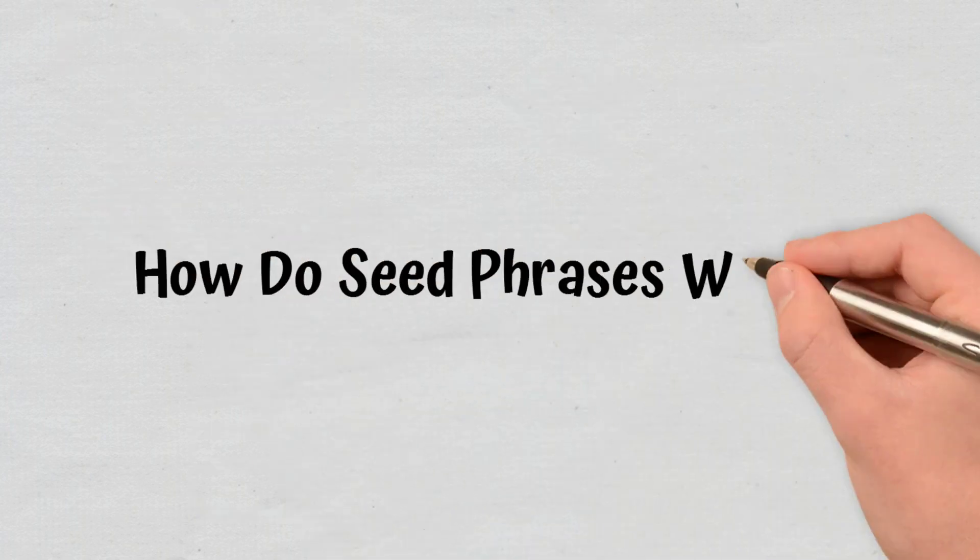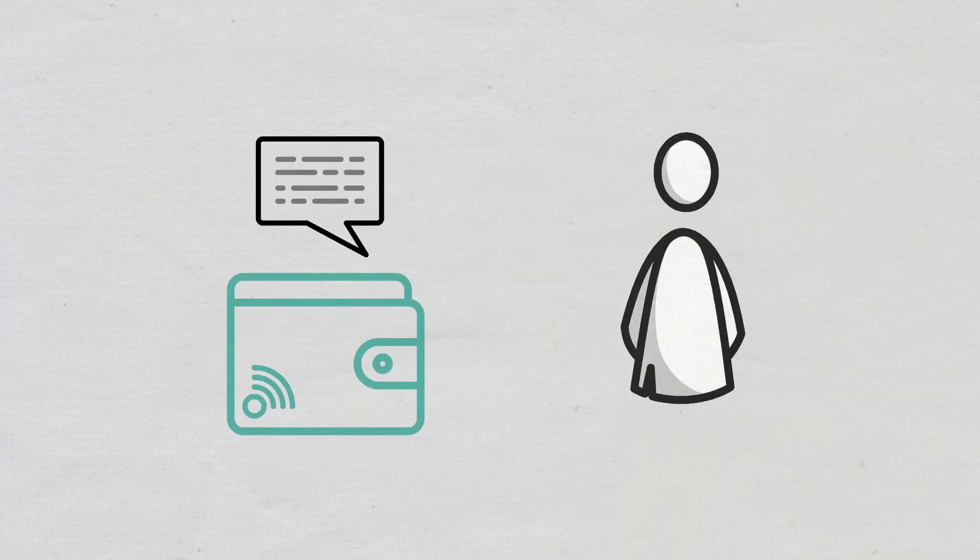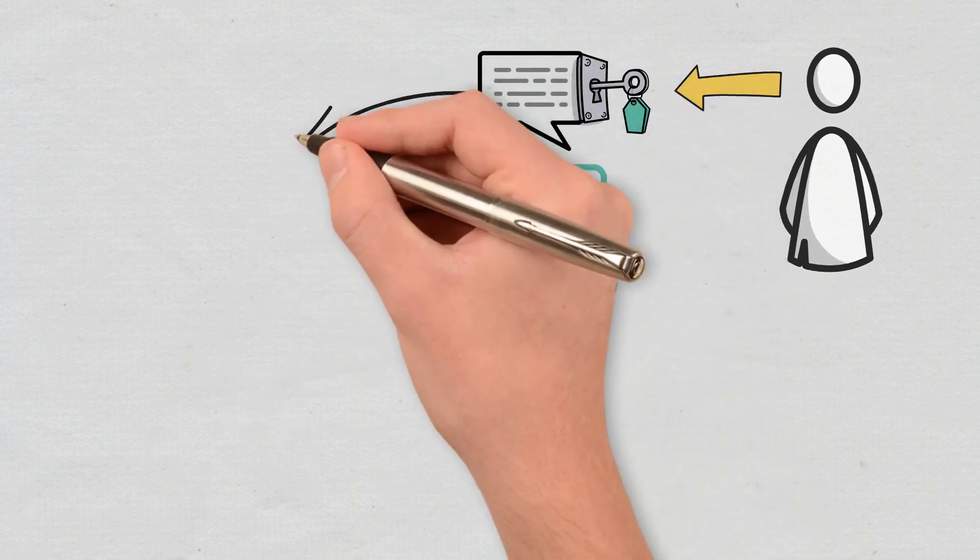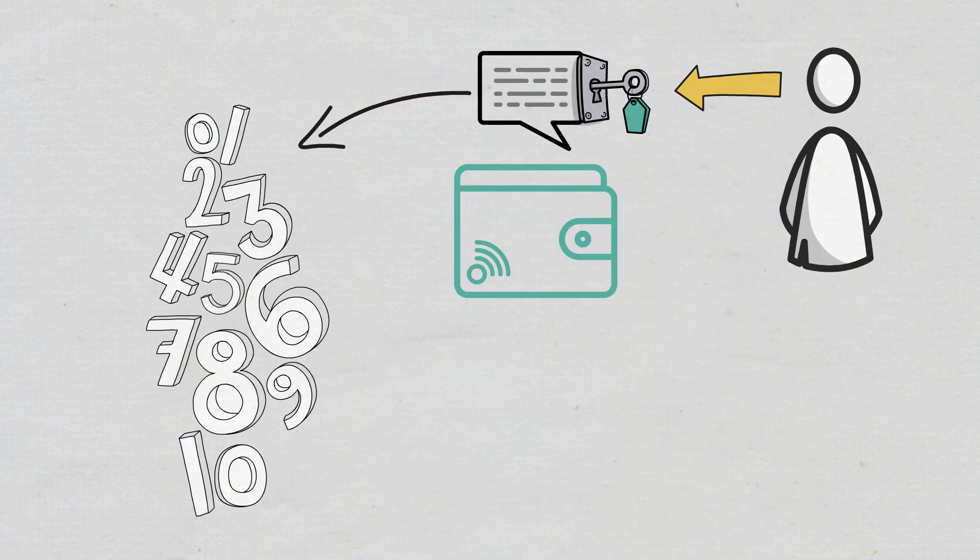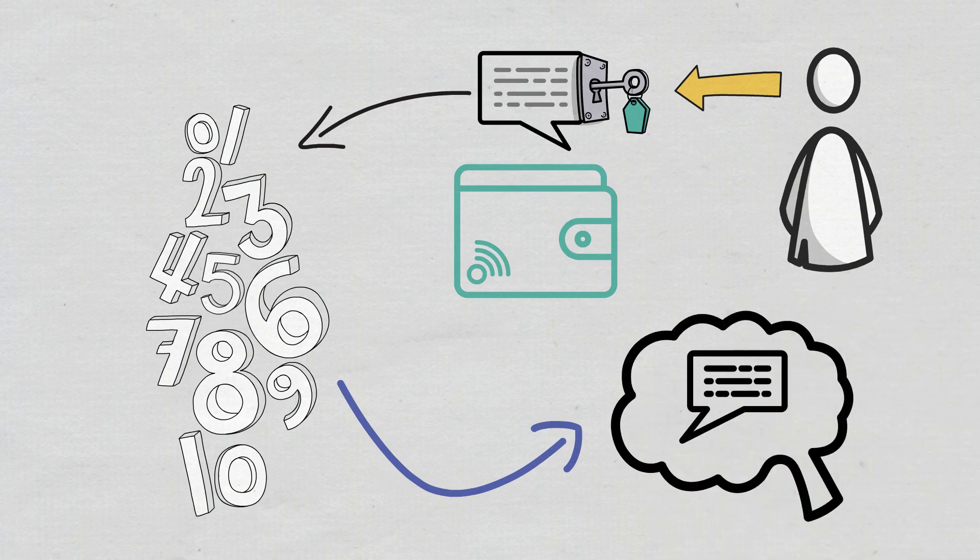How do seed phrases work? When setting up a crypto wallet, a seed phrase will be automatically generated, and the user will be required to keep and store it safely. The seed phrase is a representation of a long string of random numbers, but what the user gets is a series of simple words, and that's because it is easier to remember.